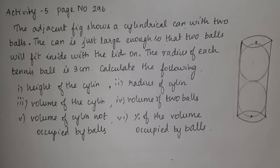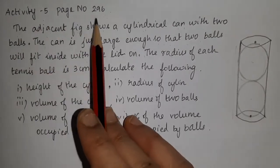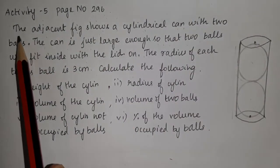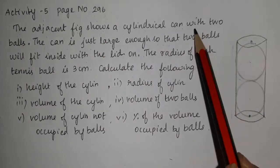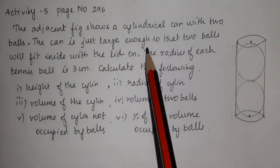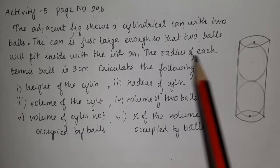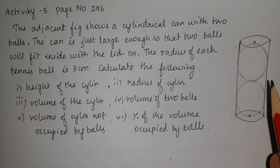Hi students. Now we are at Math Chapter 7, Mensuration, Activity 5, on page number 296. The adjacent figure shows a cylindrical can with two balls. The can is just large enough so that two balls will fit inside with the lid on. The radius of each tennis ball is 3 cm. Calculate the following.